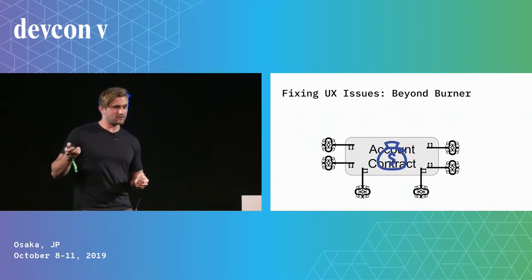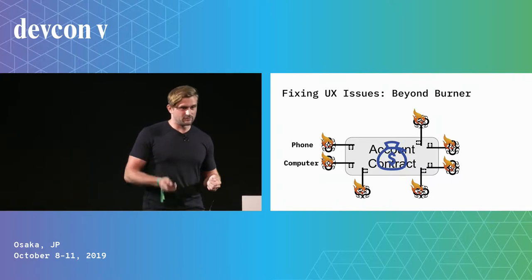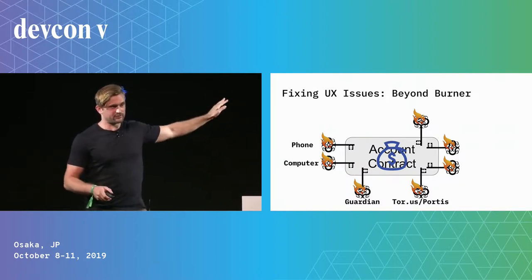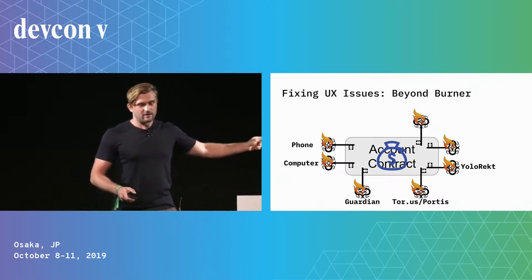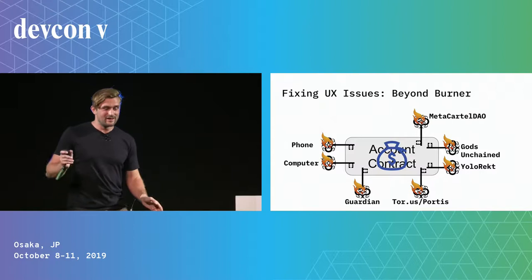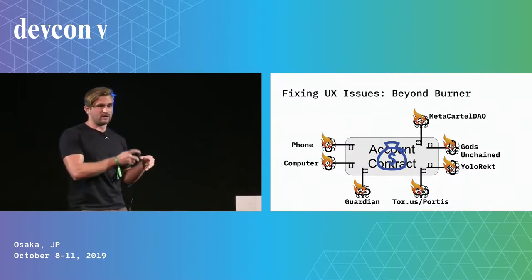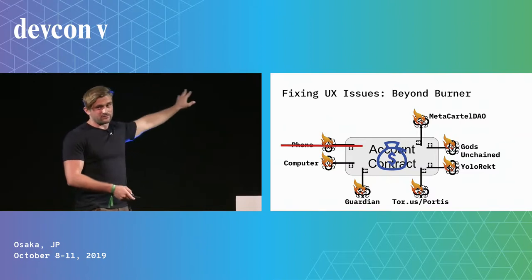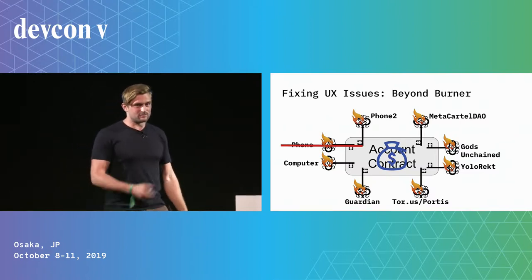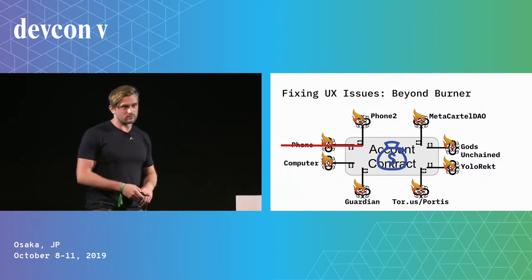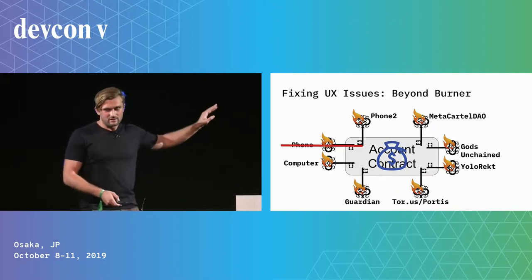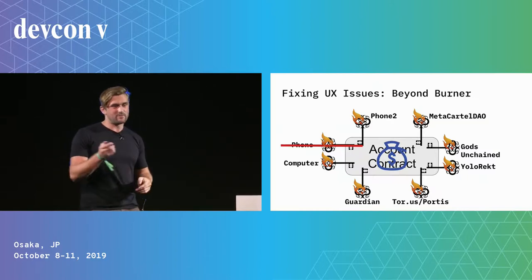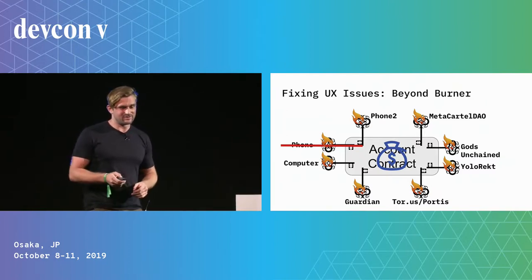Account contracts are particularly useful because you can recover your funds and uniquely permission each key for different use cases. With Beyond Burner, you have a contract account with multiple keys for different reasons: your phone, your computer, your guardian, your mom or girlfriend, a Portis or Torus integration, and a master reset. YoloRekt, Gods Unchained, and MetaCart could each have different levels of fund access — all programmable. If you lose your phone, you can recover funds through a social recovery process.